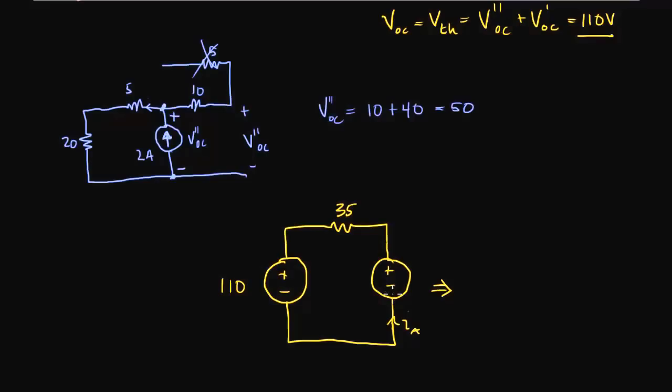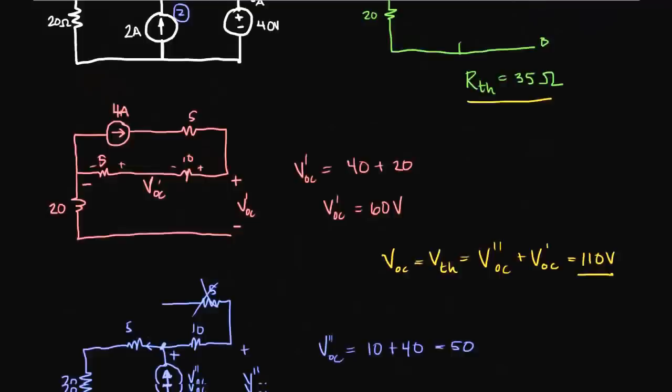So what I'm going to do, just to simplify this here, and this is 35, is I'll combine these two resistors. So that's going to be 110 minus 40.